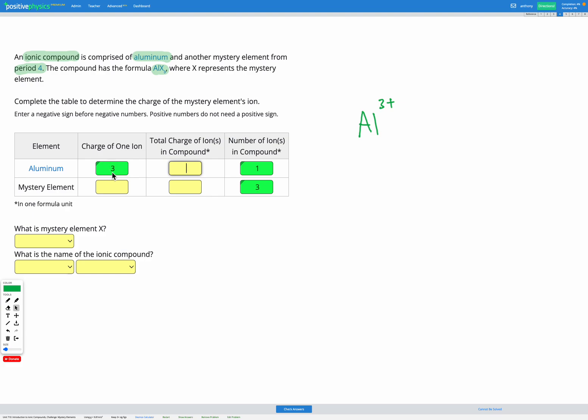It was a positive three charge for one of them. And we've only got one of them. So three times one is three. So our total charge of all of our aluminium ions in the compound is positive three.